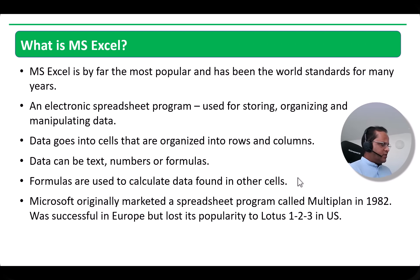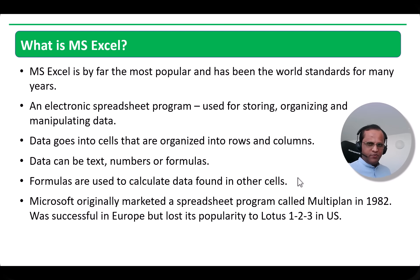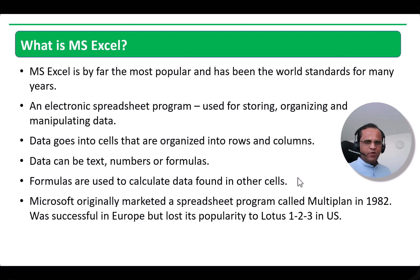Microsoft originally marketed a spreadsheet program called Multiplan in 1982. Before Microsoft Excel came, Microsoft launched a tool known as Multiplan. The problem with Multiplan was that it was very popular in Europe, but in the US it was overtaken by Lotus 123. Lotus 123 is a software from IBM, and Multiplan could not withstand its popularity — it was a total failure product from Microsoft.